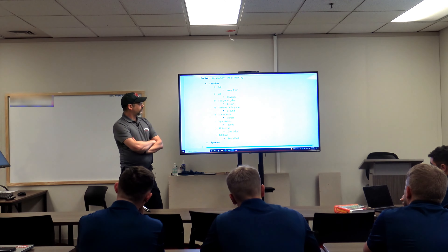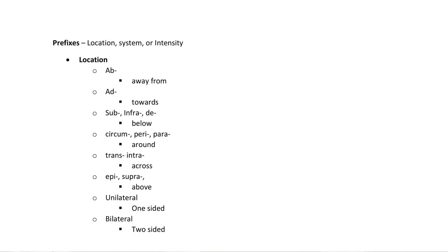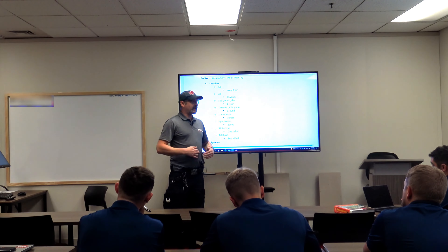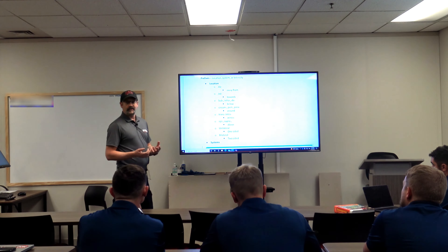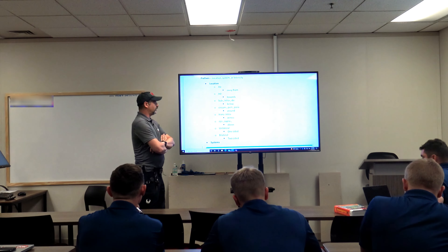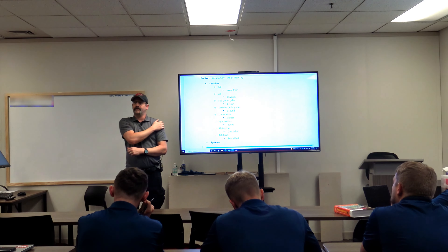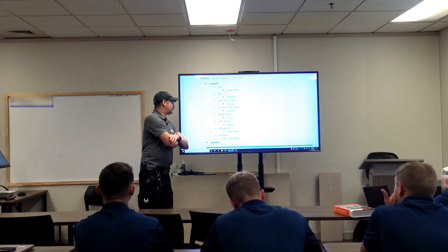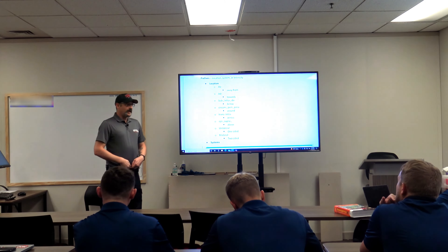Circum means around — circum-oral cyanosis means your lips are blue all around your mouth. Peri means around a specific area, like peri-umbilical bruise meaning right around your belly button. Para also means around or beside. Intra or trans means across or through — intranasal means going in through the nose, intramuscular across the muscles, and transdermal means across the skin, like nicotine patches. Epi and supra mean above — a supra-pubic catheter is drilled above your pubic symphysis to drain urine.